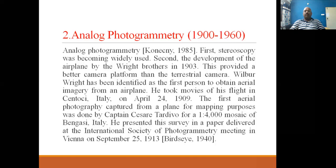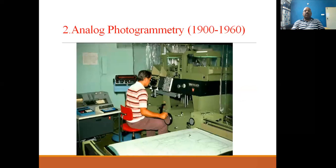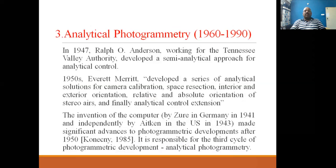Analog photogrammetry, from 1900 to 1960, was totally mechanical — using mechanical devices to prepare maps. After capturing images, maps were prepared as per client requirements. With the invention of computers, the third generation — analytical photogrammetry — combined mechanical and computer knowledge to prepare maps.